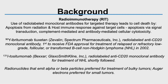With radioimmunotherapy, you usually get apoptosis via signal transduction, complement-mediated and antibody-mediated cellular toxicity. When we think of this, we think of things such as Zevalin or Bexar. Zevalin is a radio-labeled anti-CD20 monoclonal antibody that received FDA approval for treatment of relapsed or refractory low-grade follicular or transformed B-cell non-Hodgkin lymphoma back in 2002. Bexar, also a radio-labeled anti-CD20 monoclonal antibody for the treatment of non-Hodgkin lymphoma, shortly followed.